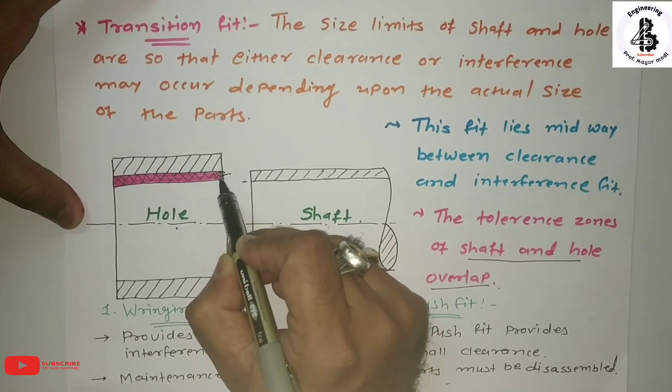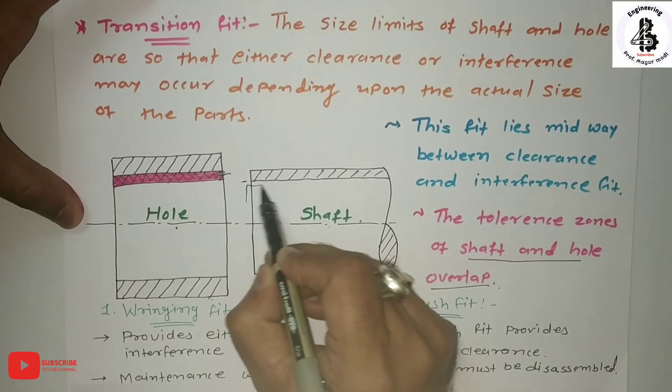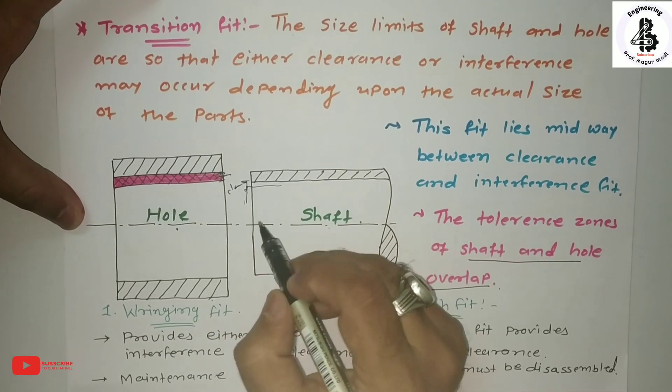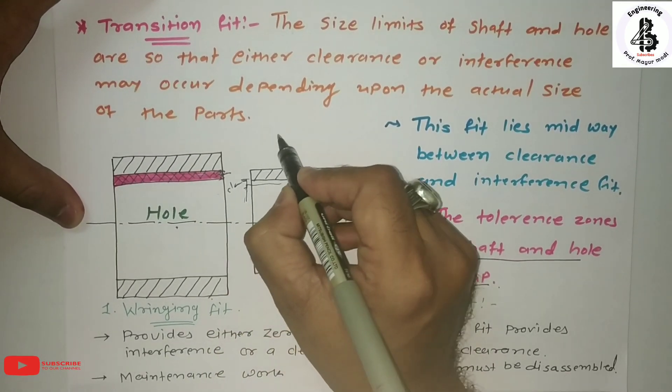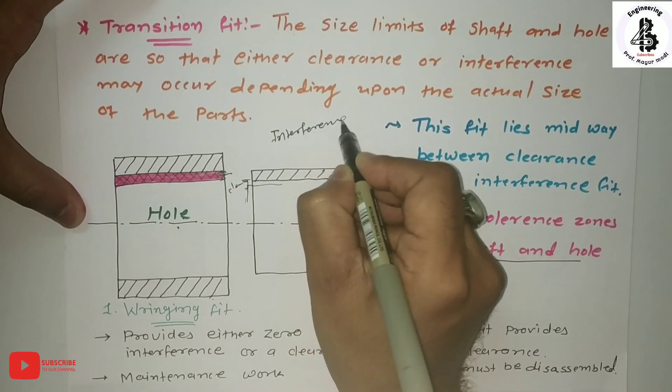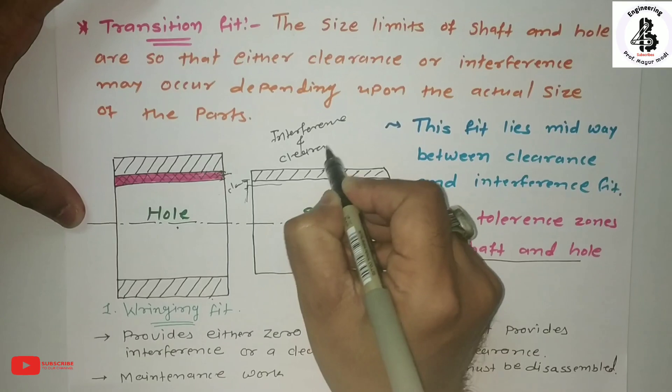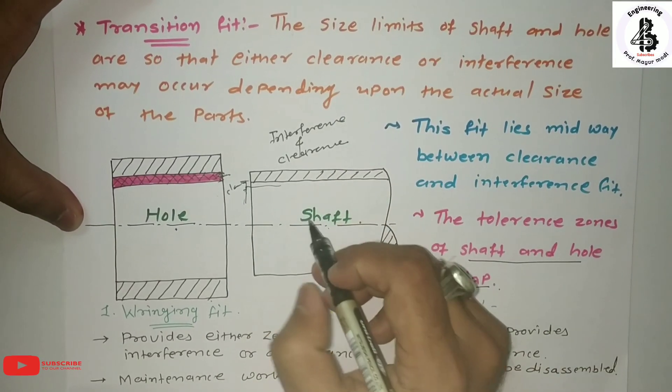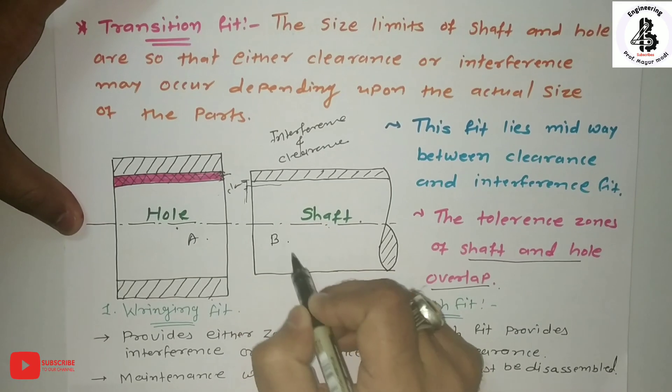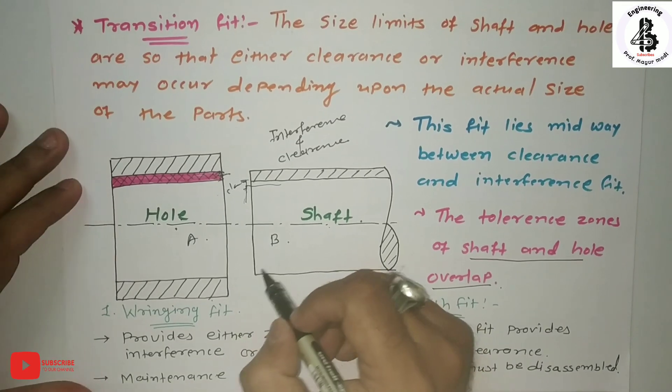It will make either a clearance fit or an interference fit depending on whether the dimensions fall between A and B when used for assembly with each other. Basically, there are two kinds of conditions for transition fits. The first one is the ringing fit.